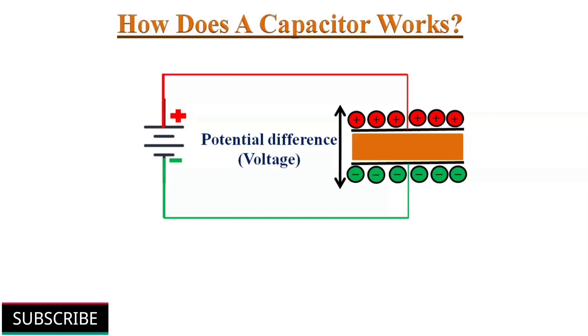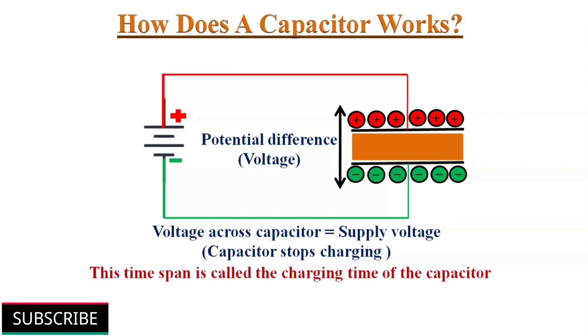The momentary flow of electrons from one plate to other through the supply, but not through dielectric, which is an insulator. The capacitor stops charging when the voltage across the capacitor equals the supply voltage. The time span is called charging time of the capacitor. If we increase the supply voltage, more charge can be forced into the capacitor.